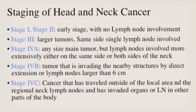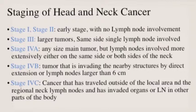Staging of head and neck cancer: early stage is when there is no lymph node involvement. Stage 3, you have larger tumors and just one-side lymph node involvement with one node. Stage 4A is when you can have a tumor of any size but more lymph nodes involved either on the same side or both sides. Stage 4B is when it starts to invade locally. And finally, stage 4C is when it's traveled outside of where it really belongs — it could be anywhere from the lungs to the brain to the bone.